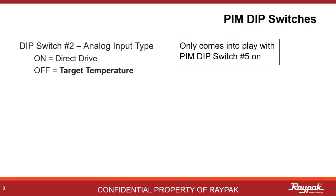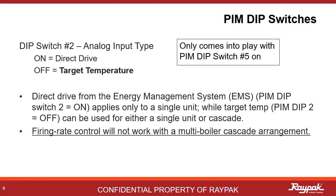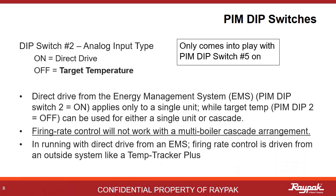Dip switch number two only comes into play when PIM dip switch number five is on. If number five is off, PIM dip switch number two does nothing. If PIM dip switch number two and number five are on, then the boiler will be looking for a volt DC signal from an external controller like an energy management system for direct drive function. With dip switch number two off and number five on, the boiler will run to target temperature. This only applies to single boiler systems — firing rate control from an external system will not work in cascade. A Temp Tracker Plus is an example of an outside driver that could be used here with dip switch number two on.